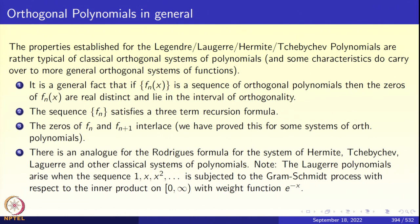All of them have a three-term recursion formula. For all of them, the zeros of f_n and f_(n+1) interlace — we proved this for some of the orthogonal systems. There is an analog of the Rodrigues formula for all of them, and all of them arise when you apply the Gram-Schmidt process to 1, x, x², etc., with respect to the appropriate measure.